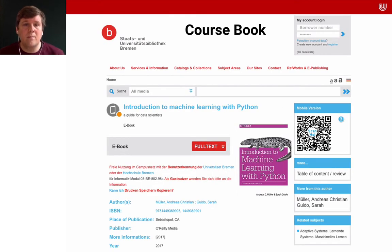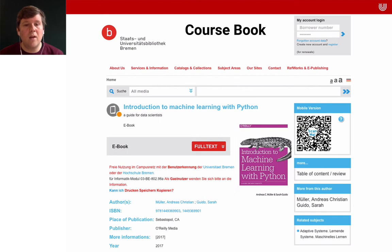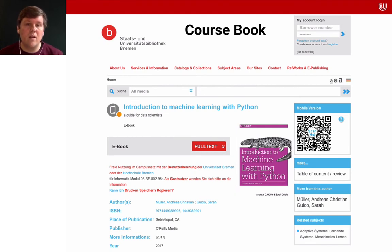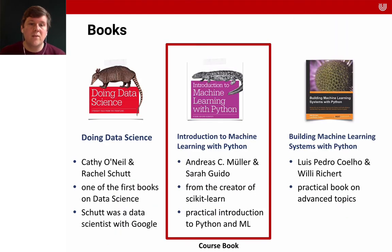We have a course book — the book this course is based on. You can get it for free as an e-book through the Staats- und Universitätsbibliothek Bremen. It's called Introduction to Machine Learning with Python and it's written by Andreas Christian Müller and Sarah Guido. This is interesting insofar as Andreas Müller is very active as a developer for Scikit-Learn, so you get insights from the expert who wrote the library on how to apply it in Python. This is the main book — a very practical introduction to Python machine learning, and if you only want to read one book, that's the one I highly recommend.